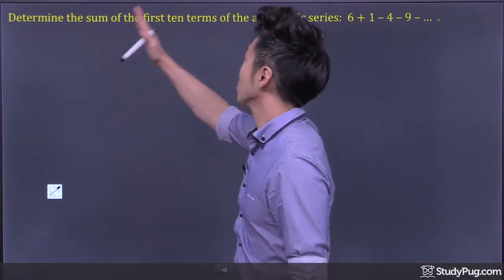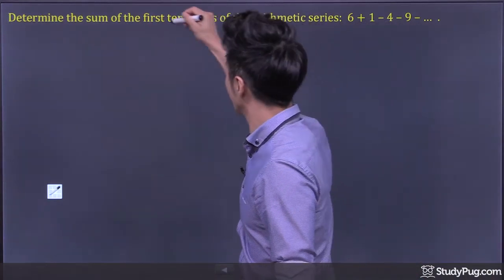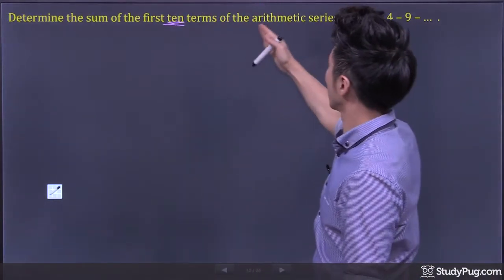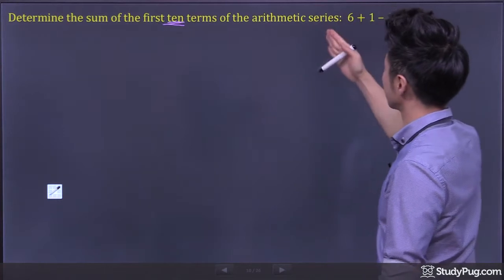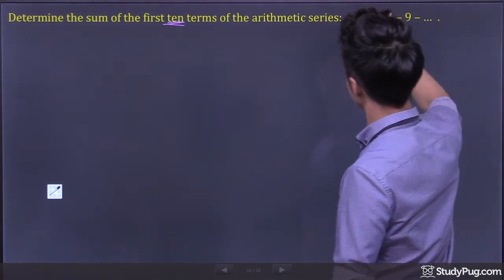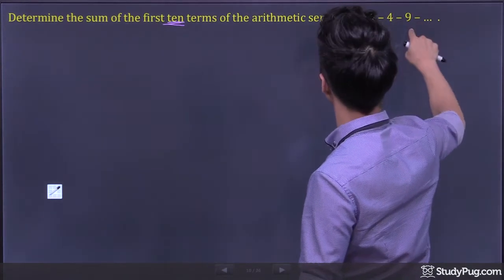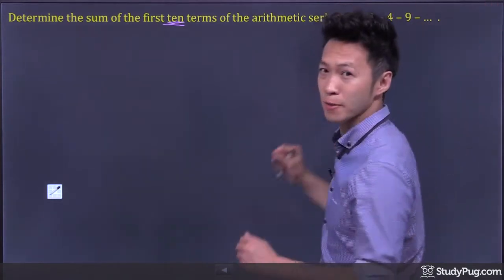Determine the sum of the first 10 terms of the arithmetic series: 6 plus 1, minus 4, minus 9, and so on.